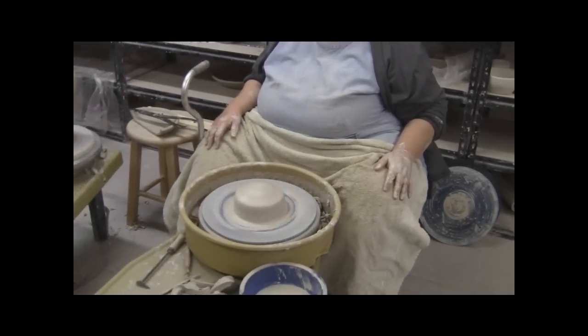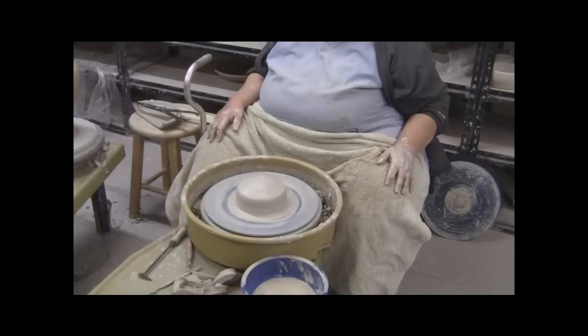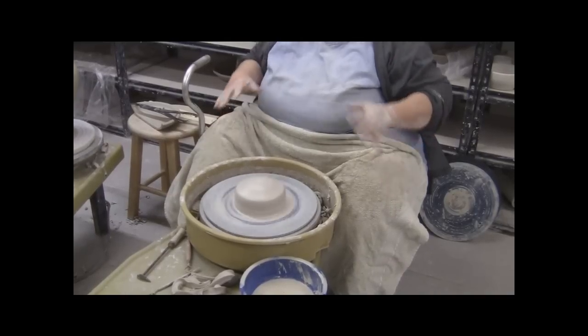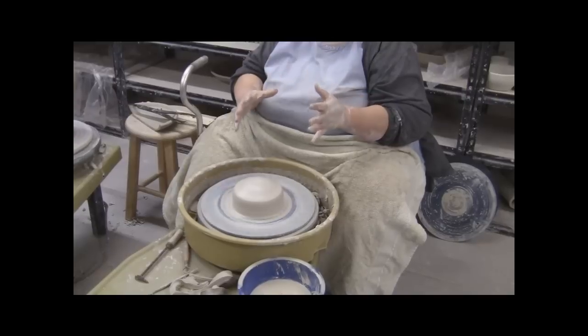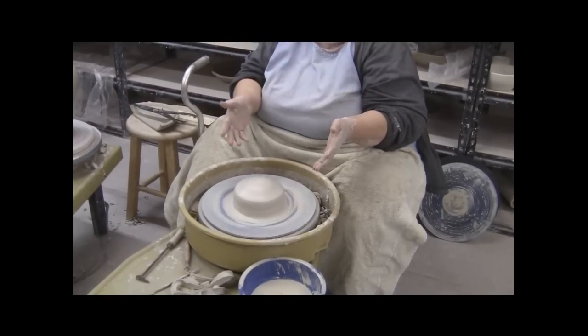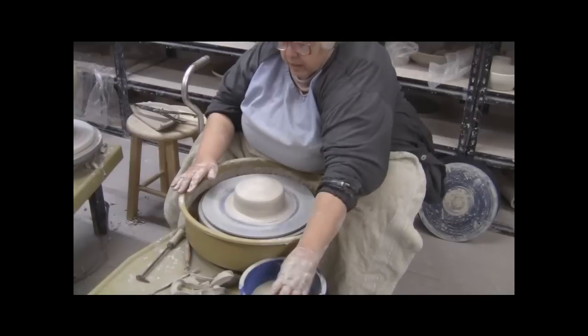When you center for any form that's going to be low and wide, a plate, a pie plate, a pasta bowl, any form like that, you cannot center the clay wide. You must center the clay high, natural centering, if you were going to make a cylinder or a mixing bowl or anything else, and then work it down. So this clay is centered, and now I'm going to start lowering it.